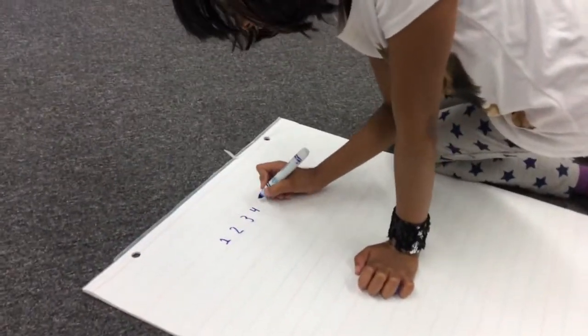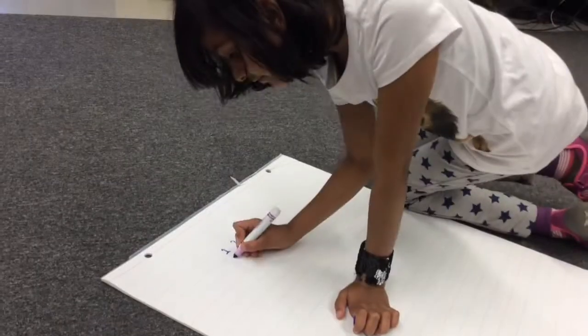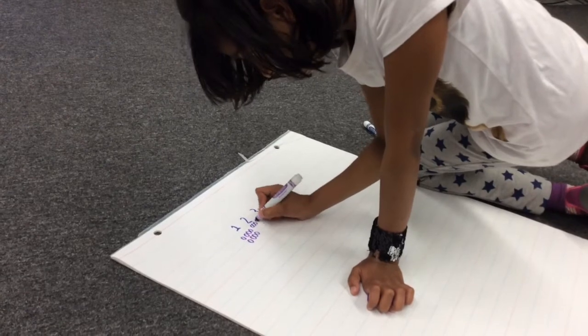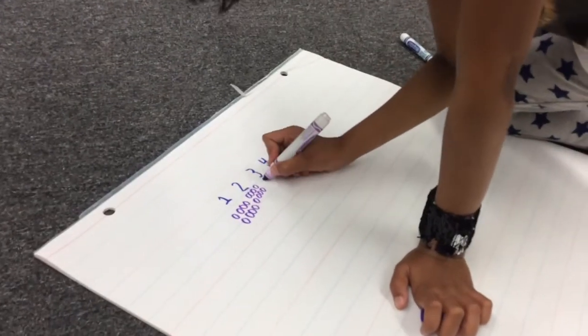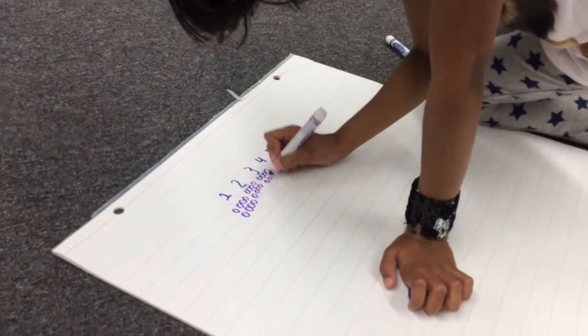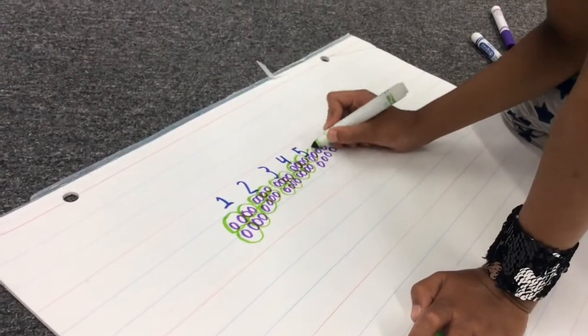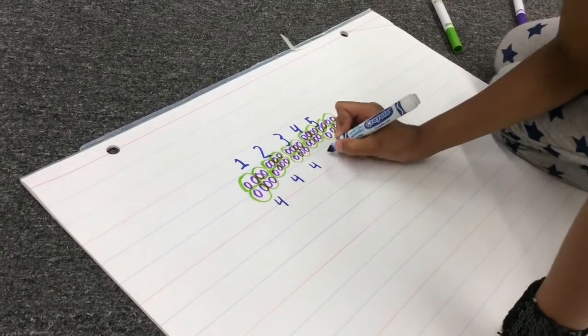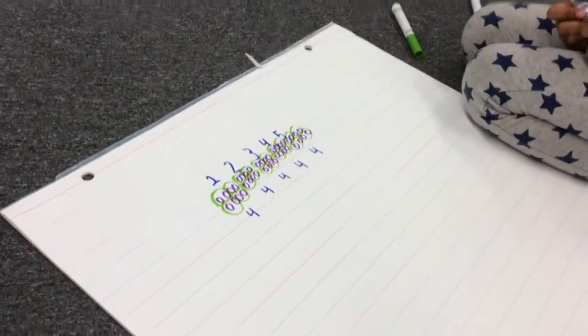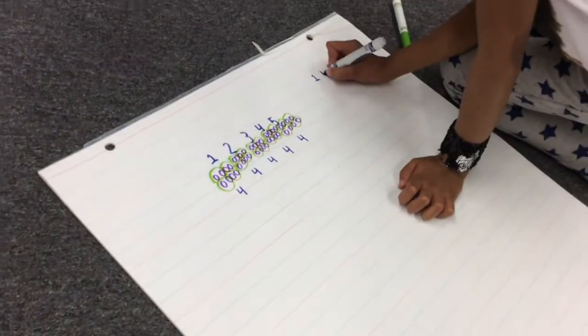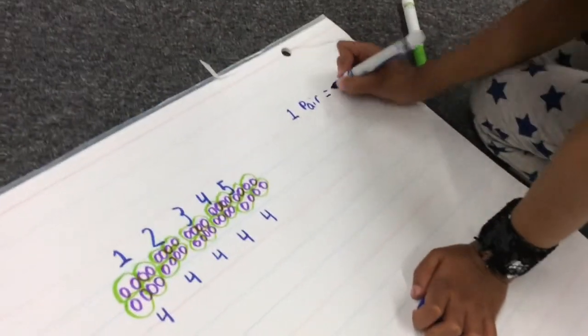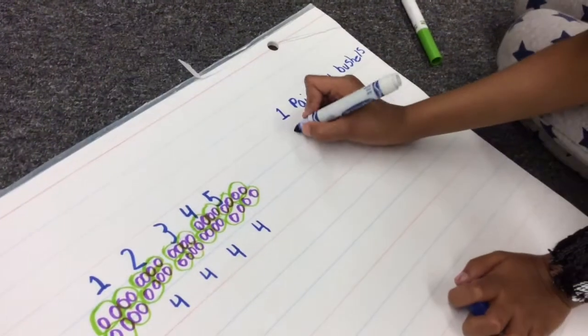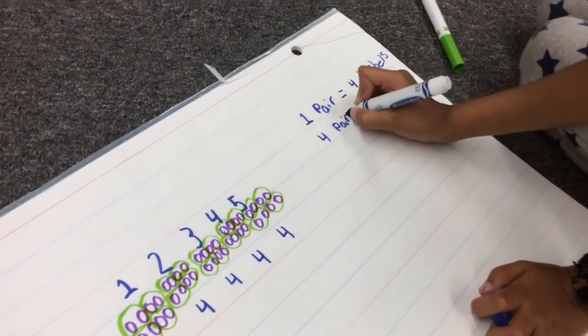Minha made a model for five classrooms and put eight kids in each class. Then she put them into pairs. There were four pairs in each class. Each pair collected four bushels, so four times four equals sixteen bushels for each classroom.